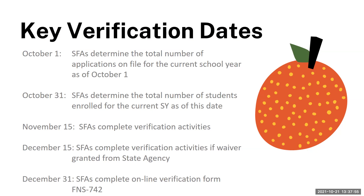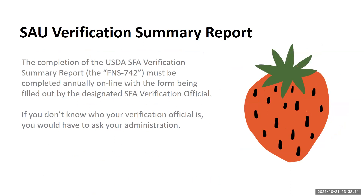The completion of the USDA SFA verification summary report, the FNS 742, must be completed annually online by the designated SFA verification official. If you don't know who your verification official is, you would need to ask your administration. The FNS 742 that the verification official will complete is part of the my NHDOE online system, and there is a tab that will show up for the verification official.